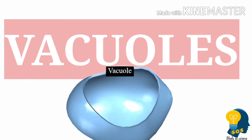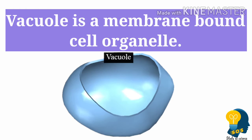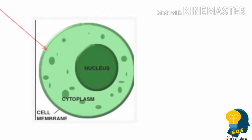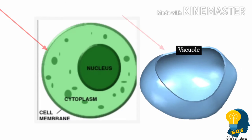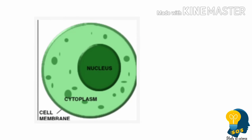A vacuole is also a membrane-bound organelle. When we look at the nucleus, it was bounded by two membranes, but the vacuole is bounded by a single membrane.